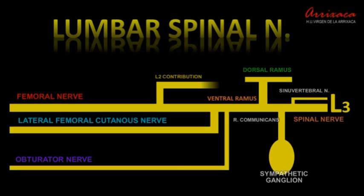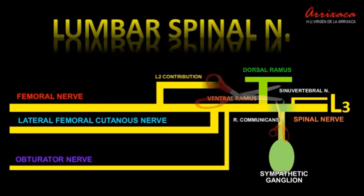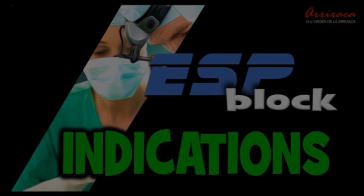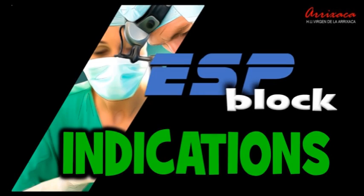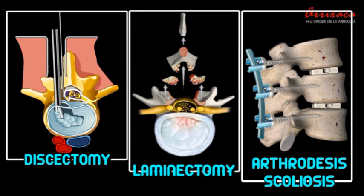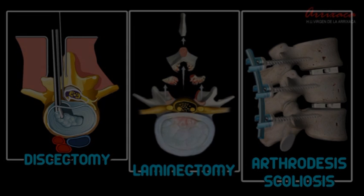The lumbar erector spinae plane block is known to produce a consistent multi-metameric blockade of the dorsal rami. It also produces a sectional differential blockade on the ventral rami and the sympathetic chain. It should be noted that evoked potential tests performed during surgery will not be affected by the use of this technique. The lumbar erector spinae plane block is indicated to provide analgesia for lumbar spine surgery as part of a multimodal analgesic regime.